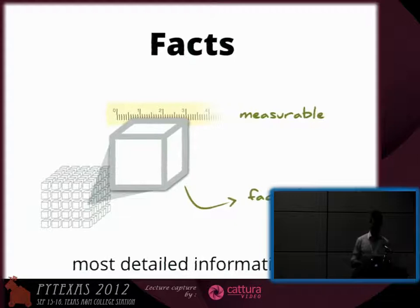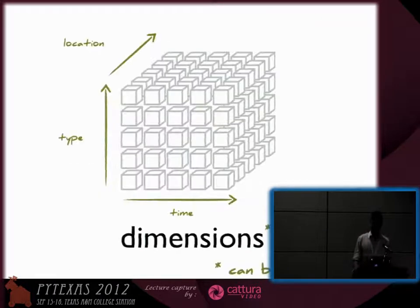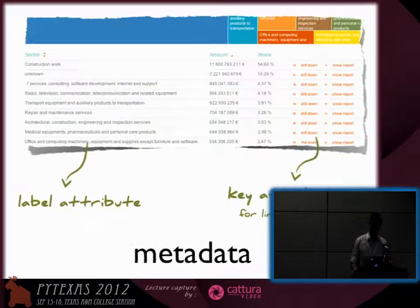A fact can be any kind of transaction in your business, and you can measure it — so it's invoice amount, or call duration if you are measuring telecommunications data. Another property of the data is a dimension, which describes the context of the facts, for example, location or where the fact happened.